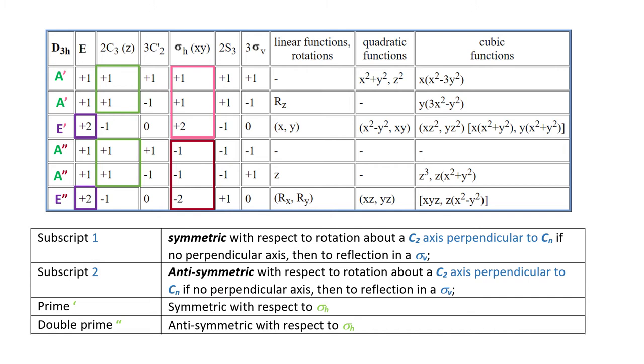Now for E representations, we don't need to do anything else, because we can't distinguish them now. But it's not the end of the story with As. We will give them additional subscript 1 or 2. So let's look under C2 perpendicular to the main axis. So the first representation ends up being A'1 and so on.